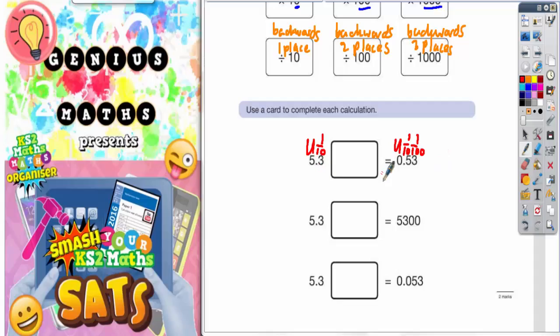So if both digits have gone backwards one place, we must have divided by ten. That's this card here.